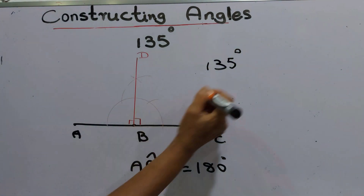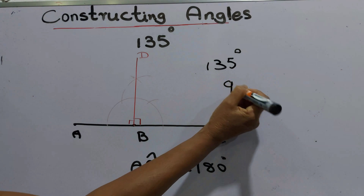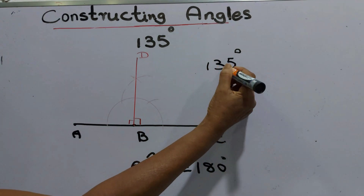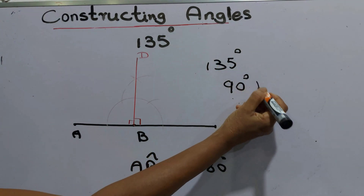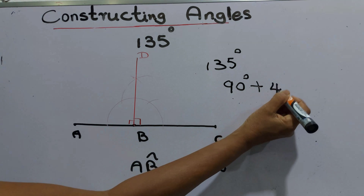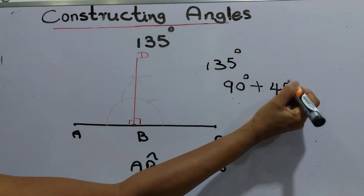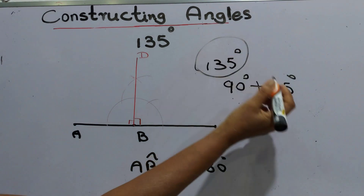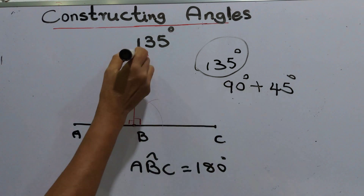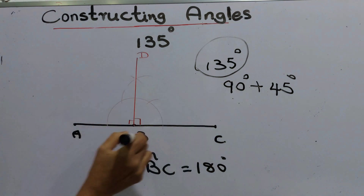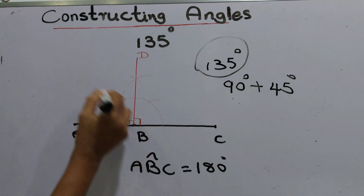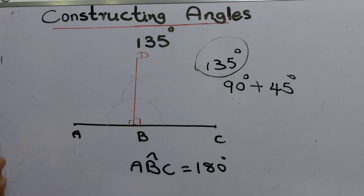We already got 90 degrees. How many do we have to add to make 135? We have to add another 45 degrees to make 135 degrees. The DBA angle is 90 degrees, so we can bisect the DBA angle.